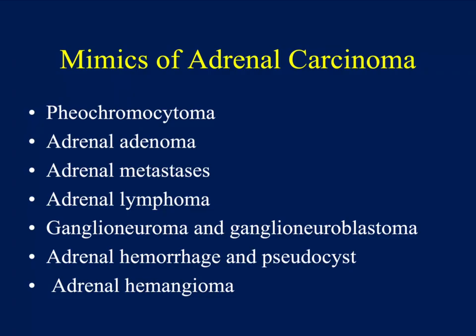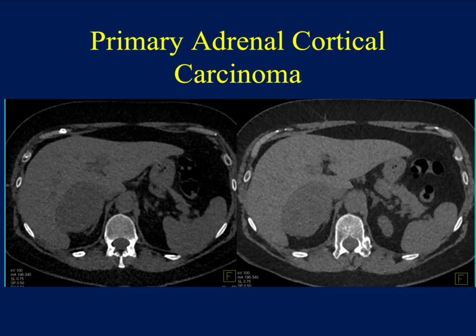Thinking about mimics: I mentioned pheo. I showed cases of large adrenal adenomas. Metastasis can look very similar. Lymphoma, particularly primary adrenal lymphoma, can look very similar. Ganglioneuromas or ganglioneuroblastomas are very rare tumors, but there is some overlap. Adrenal hemorrhage and adrenal hemangioma are also mimics. If you have an adrenal lesion that bleeds, it's hard to tell what's going on beneath it — whether it's a met, an adenoma, a pheo, or an ACC, the differential can indeed be very difficult.